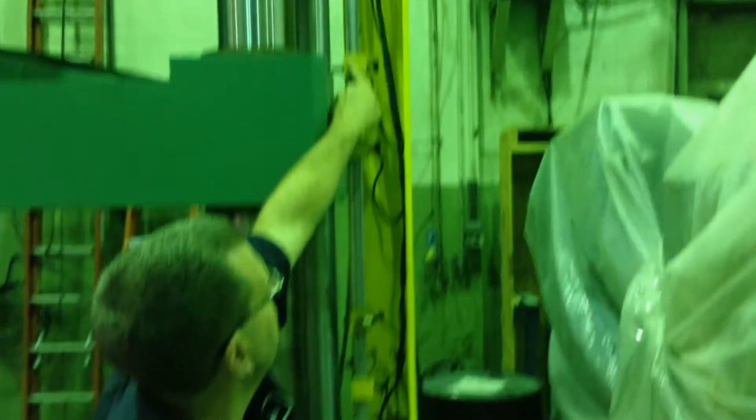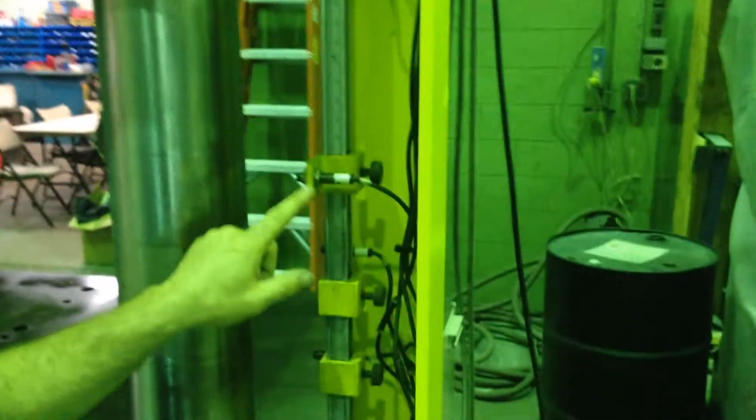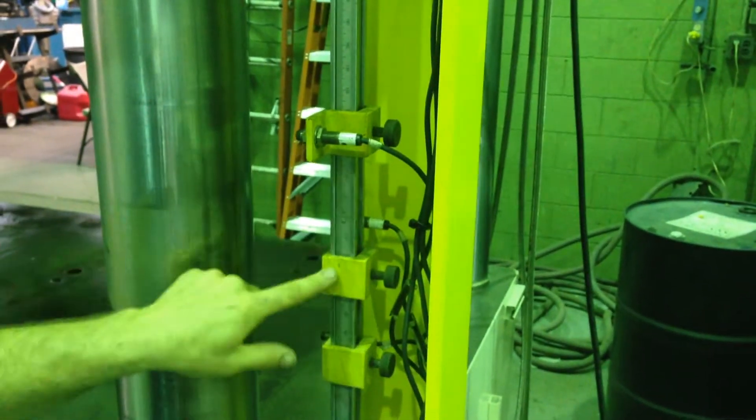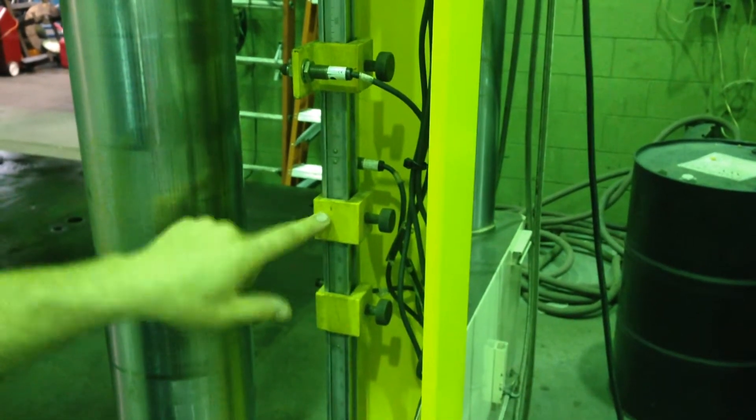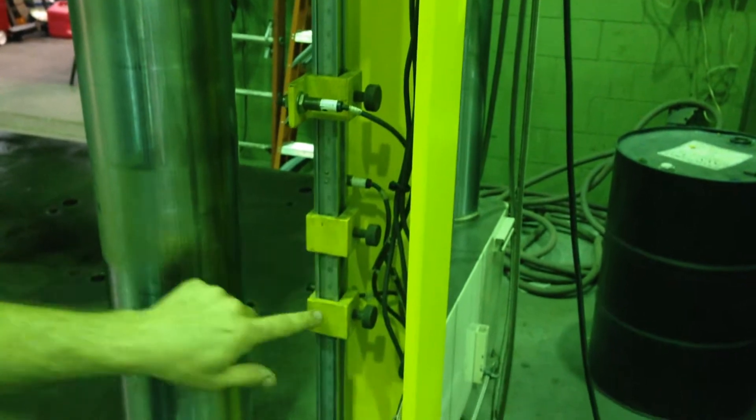This here is your top limit. This is your slow to top. This is your rapid. From here to here is your rapid, here to here is rapid advance, here to here is pressing.